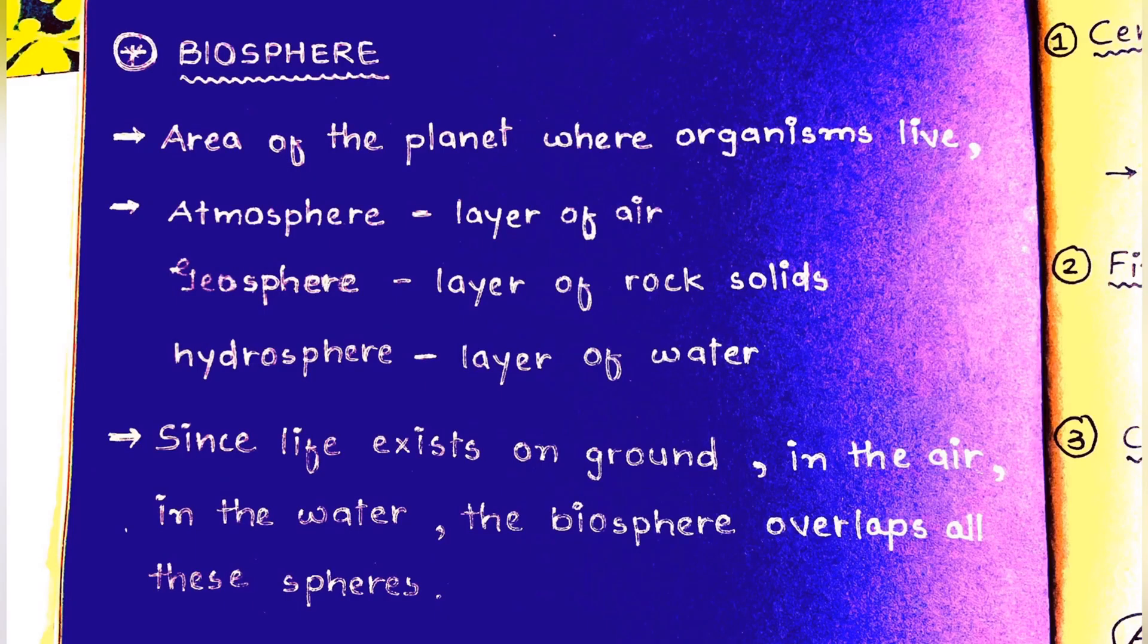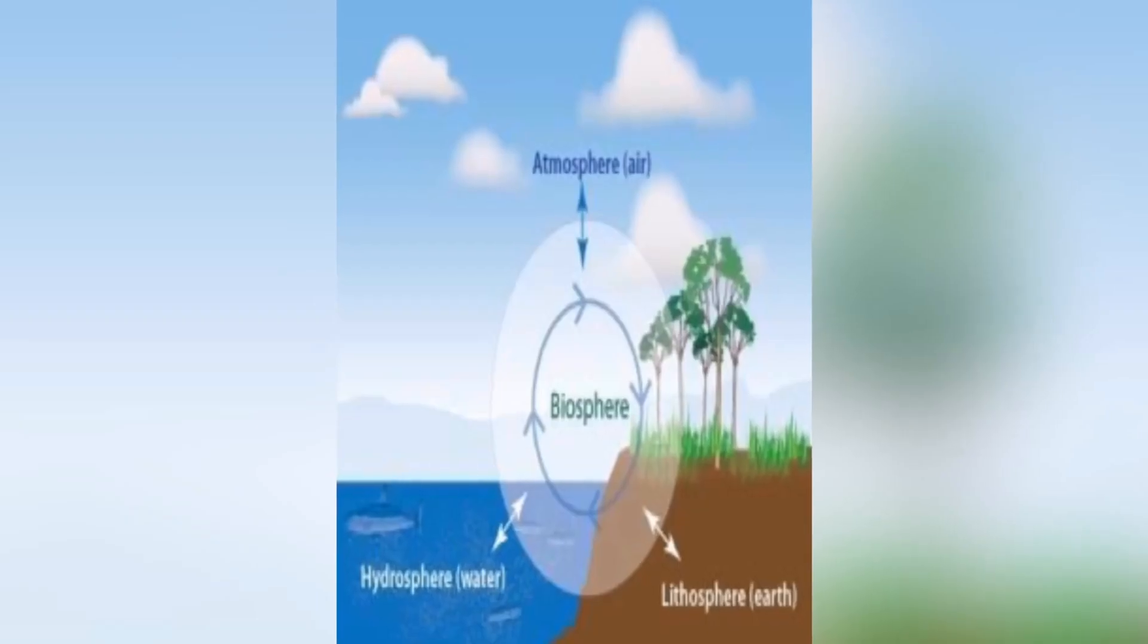And the last is biosphere. It is the area of the planet where organisms live. Atmosphere is the layer of air, geosphere is the layer of rock, and hydrosphere is the layer of water. Since life exists on the ground, in the air, and in the water, the biosphere overlaps all these layers.